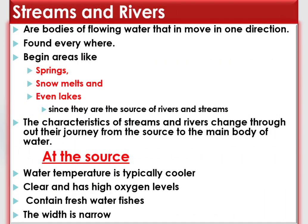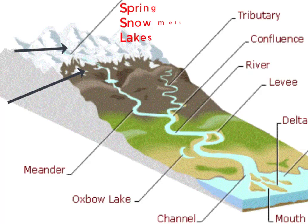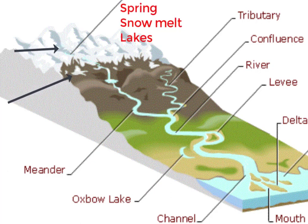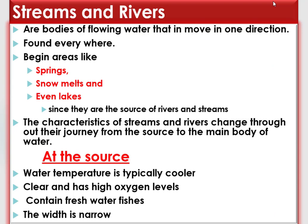Streams and rivers are bodies of flowing water that are always moving in one direction. These streams and rivers are found everywhere in the world. Rivers and streams begin in areas like springs, snowmills, and even lakes, since these three main sites are sources of rivers and streams. The characteristics of streams and rivers change throughout their journey from the source to the main body of water. At the sources of rivers and streams, water temperature is typically cooler, the water is clear, and has high oxygen levels.